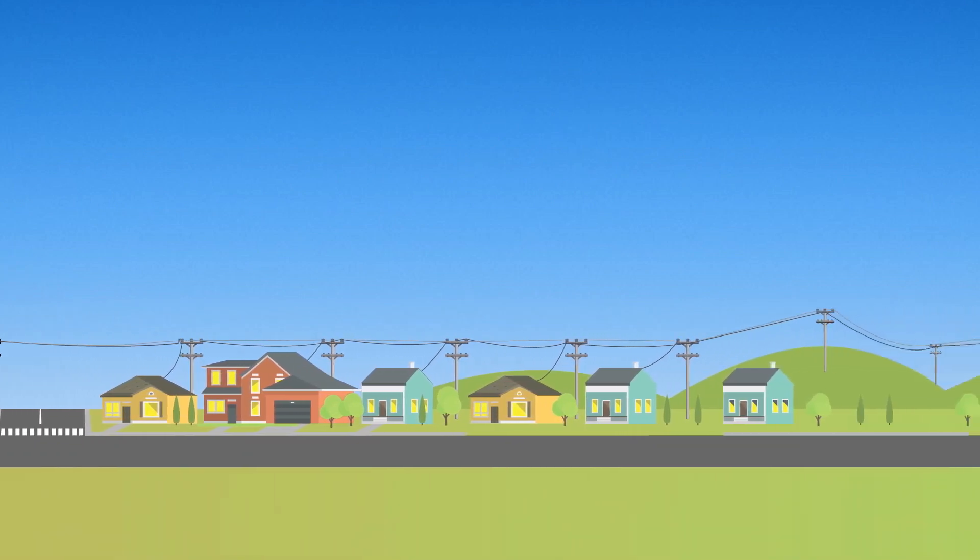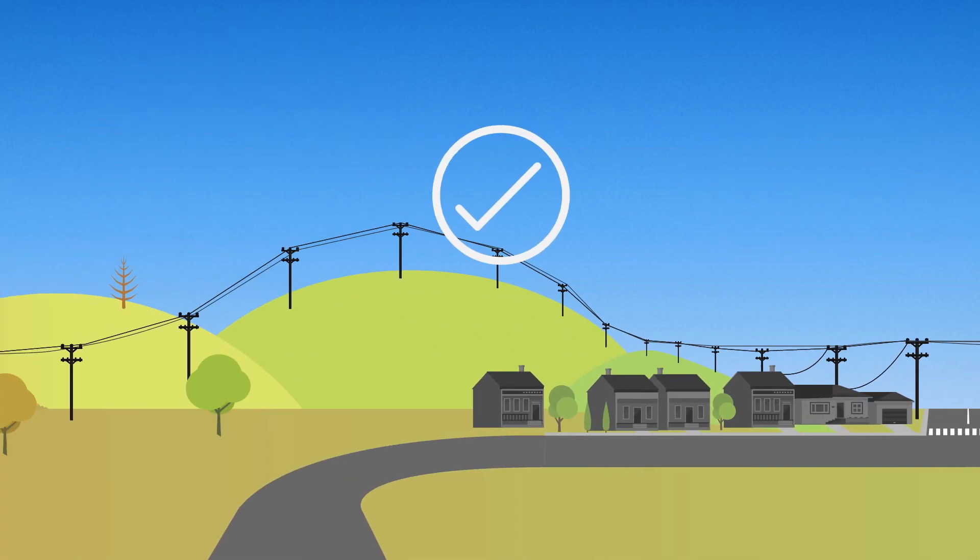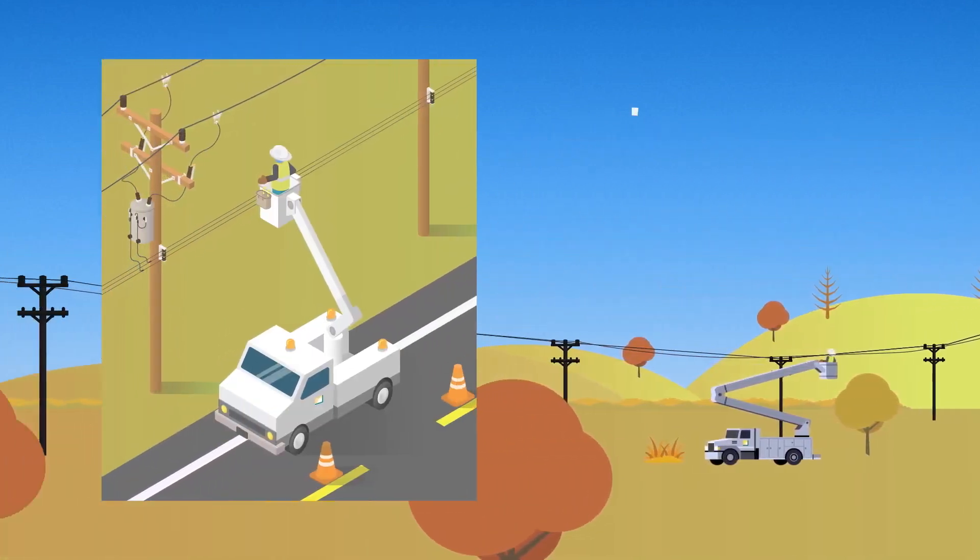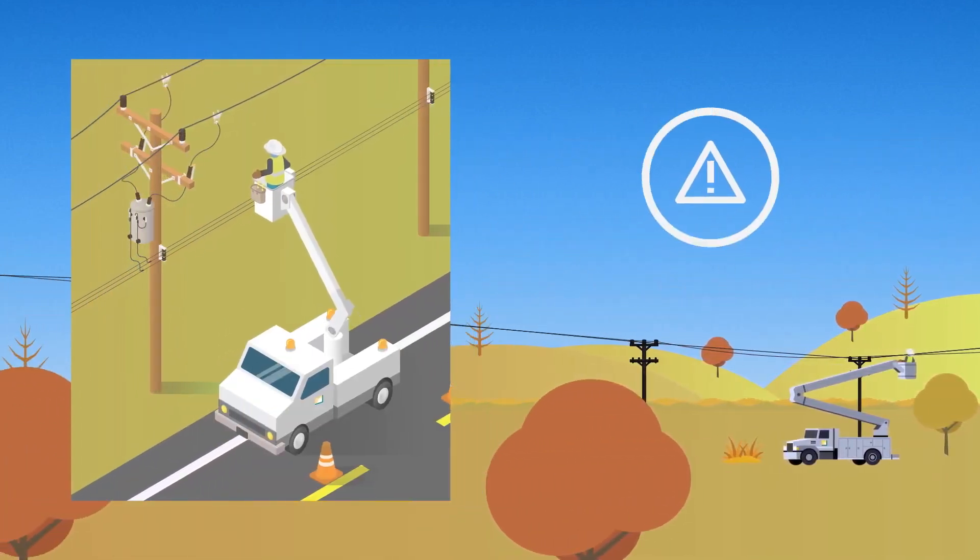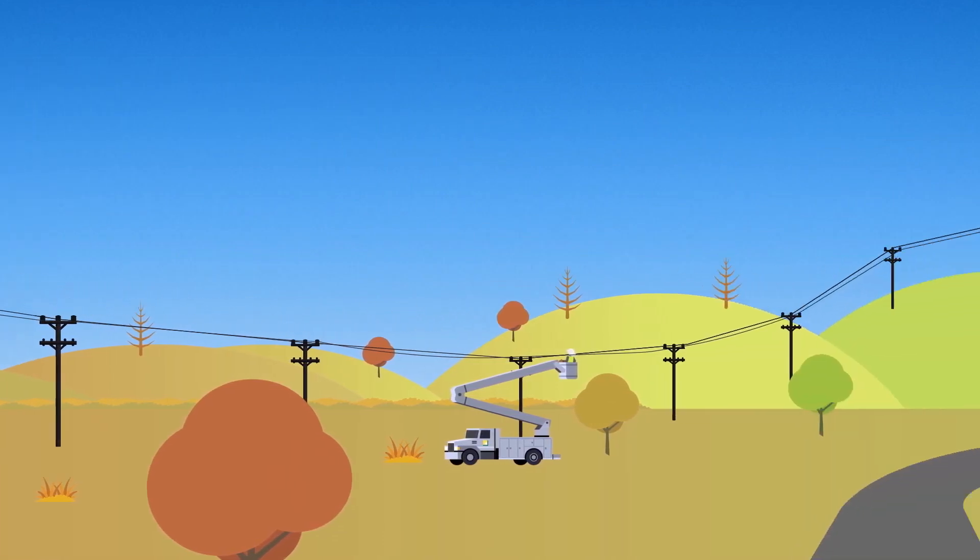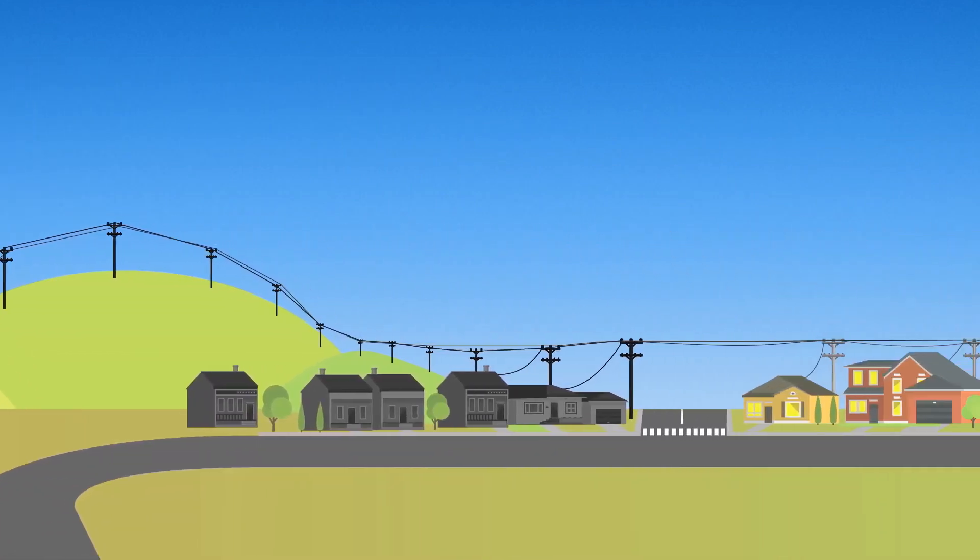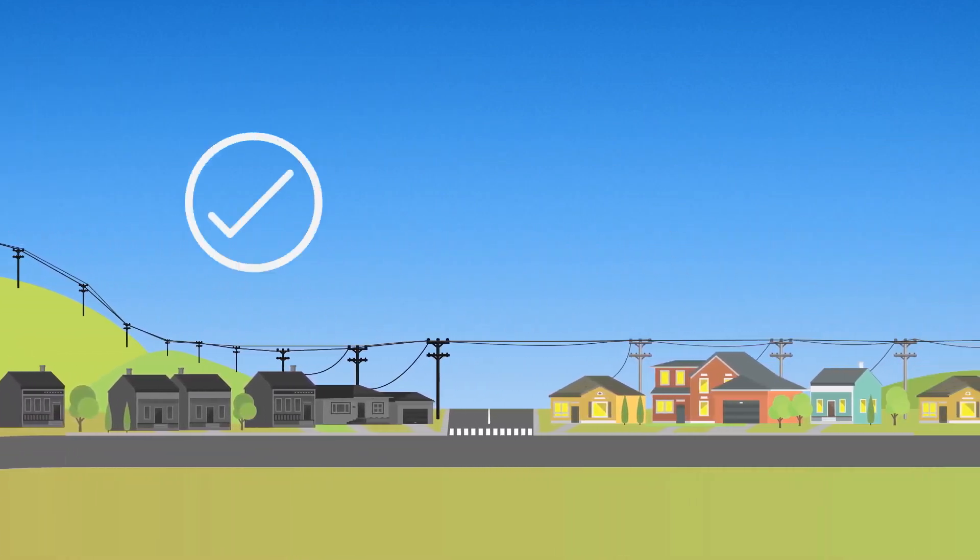When we get an all-clear from our meteorologists, we patrol every circuit that was shut off. If we see damage, we will send out crews to repair it. Sometimes there is only a lull before winds will come back. If we can, we inspect the lines and turn power back on temporarily.